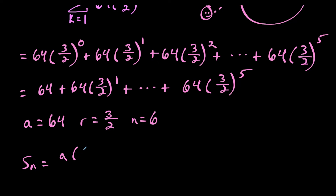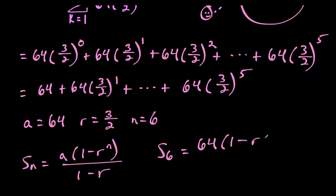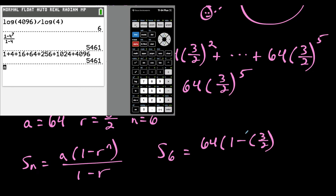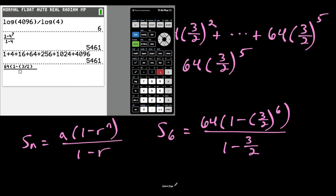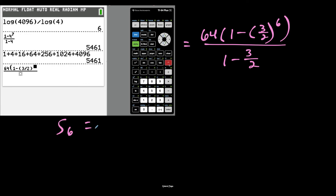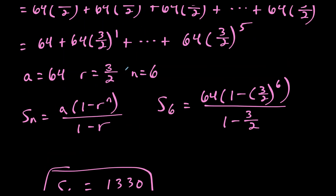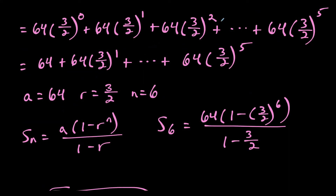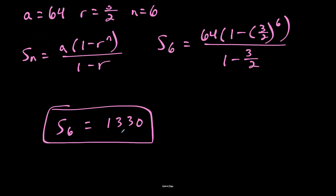Plugging into the formula S sub n equals a times 1 minus r to the n over 1 minus r, the sum of the first 6 terms equals 64 times 1 minus 3 halves to the 6th power, divided by 1 minus 3 halves. Typing this in, the sum works out to 1,330. You can verify by expanding all six terms including 3 halves to the 3rd, 4th, and 5th — it still comes out to 1,330.